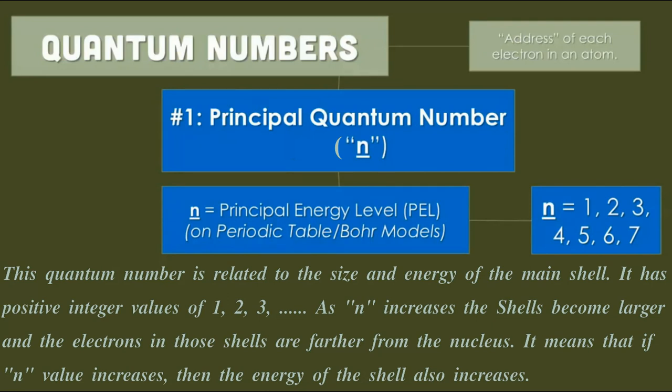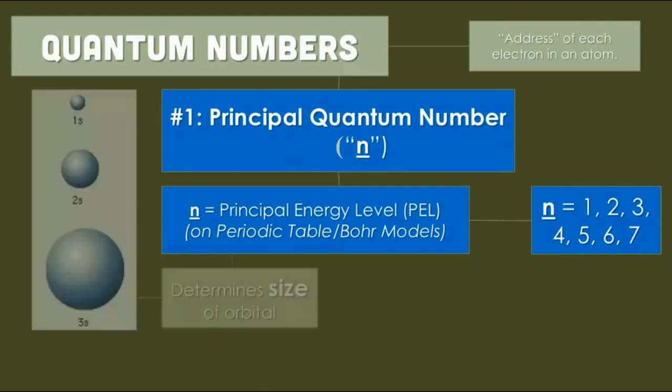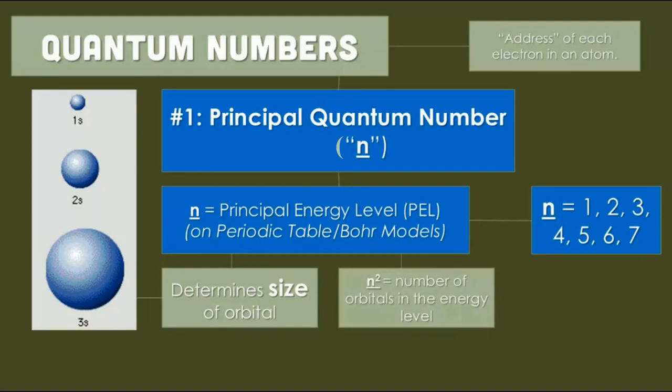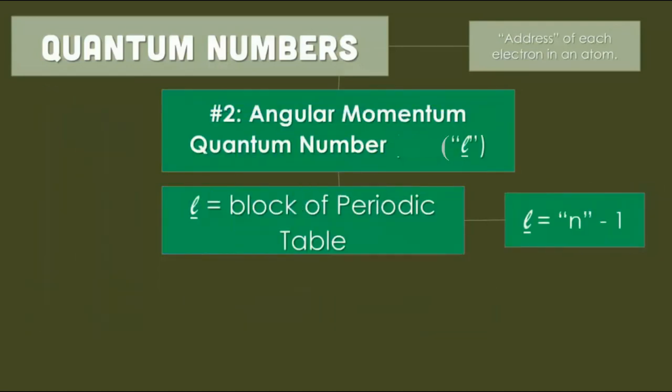It means that if n value increases, then the energy of the shell also increases. It tells about main shell - look here, 1s, 2s, 3s, and as the number increases the size also increases. Look here, n squared equals the number of orbitals in the energy level.